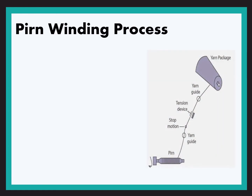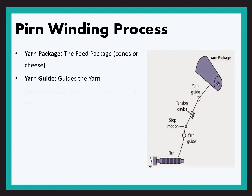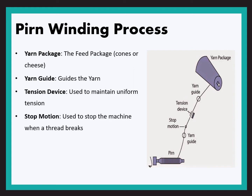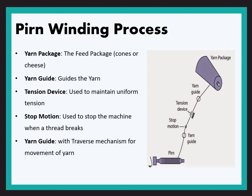The pern winding process is a little different from the normal winding process. Unlike winding, the final package is smaller than the input package. A cone or cheese from the winding process is fed to the machine. A yarn guide guides the yarn through the path, then a tension device maintains uniform tension. Next is a stop motion, which stops the machine when a thread break occurs. A yarn guide with a traverse mechanism is used for the movement and guidance of the yarn, and the last element is the pern, which is the final package. Since yarn from winding is already fault free, additional fault removal is not needed here.